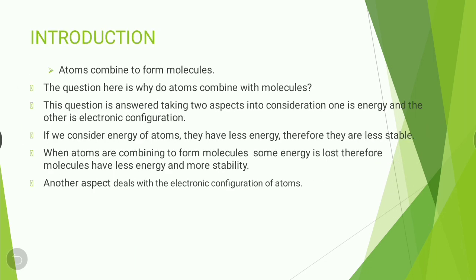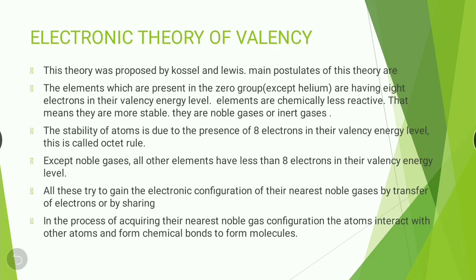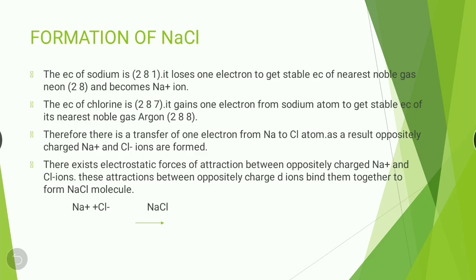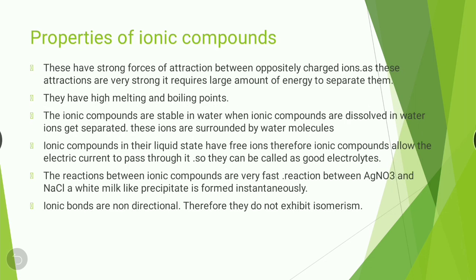In summary, today we discussed the introduction to chemical bonding, the electronic theory of valency, types of chemical bonds, the ionic bond, formation of NaCl as an example, and properties of ionic compounds. In the next class, we will continue with covalent bond, coordinate covalent bond, and metallic bond. Thank you.